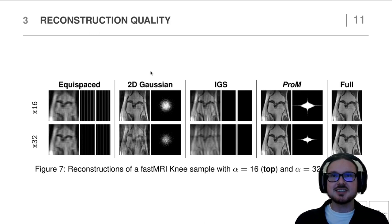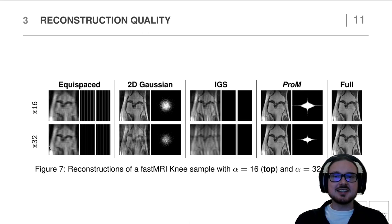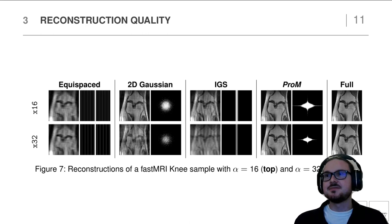We compared our method against an equispaced mask, a 2D Gaussian mask, and iterative gradient sampling. We noticed that especially for extremely high acceleration factors — here for 32 — our approach has less blurring and fewer artifacts than the other compared methods.